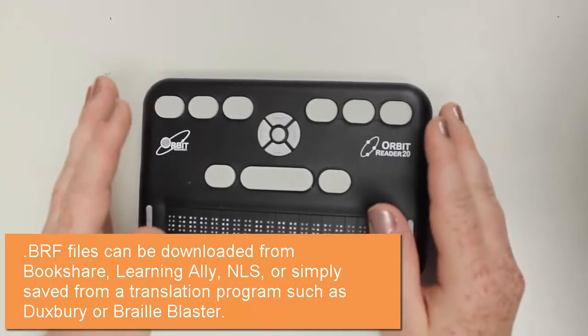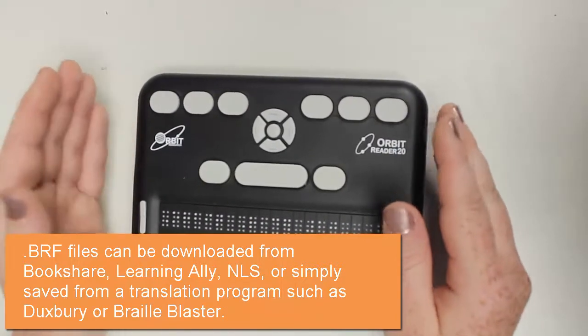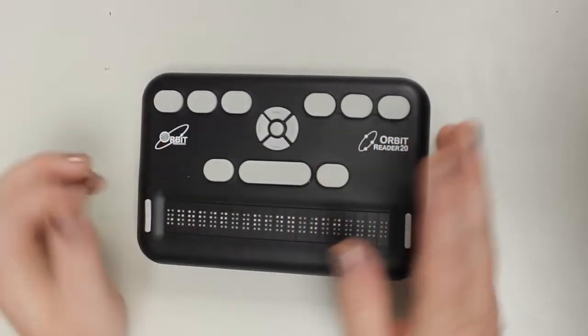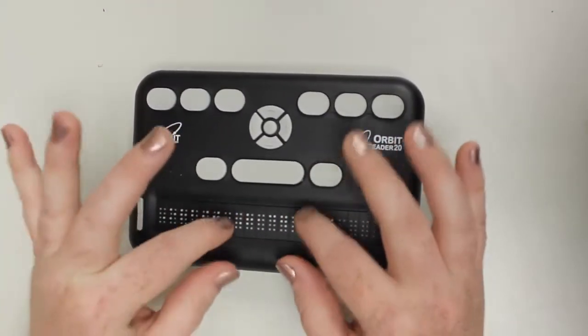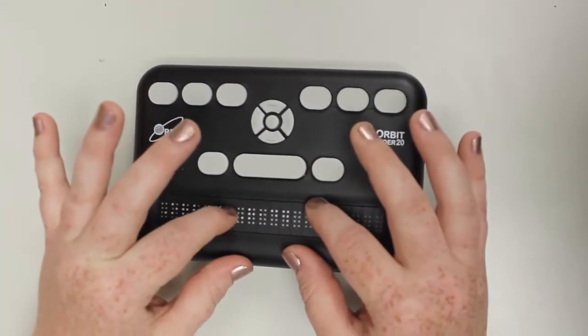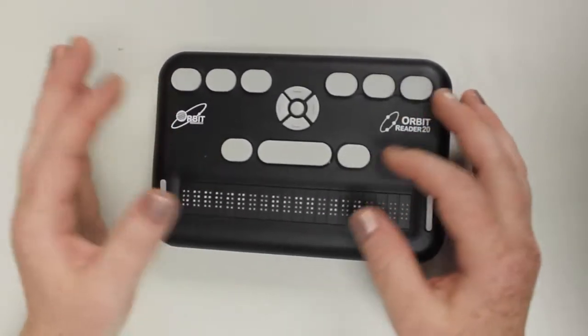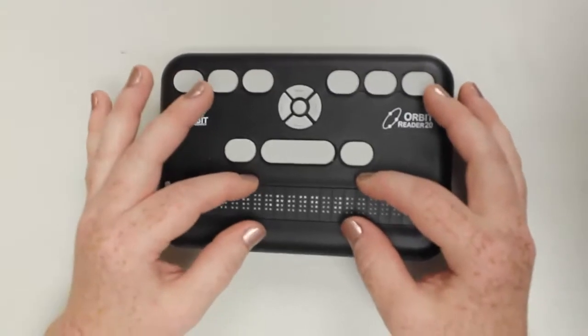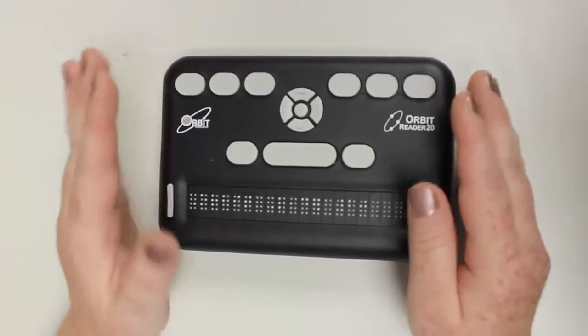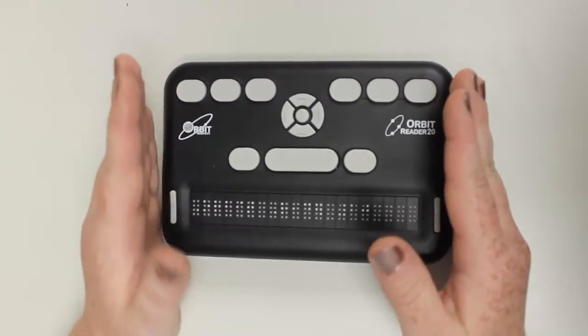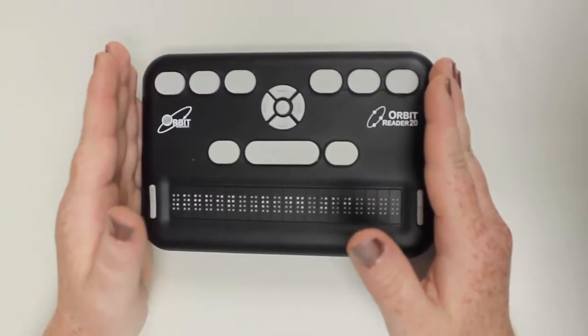Just keep in mind that if you download it in UEB contracted Braille, that's how it's going to show up here because that's the file type that it is. If you do it in eBay contracted Braille, that's how it will show up here. This does not do translation.